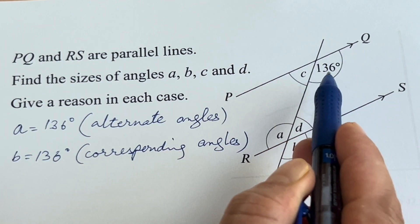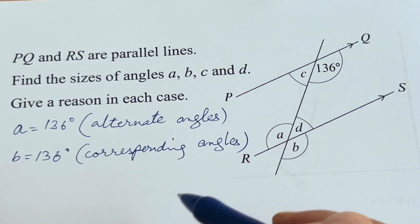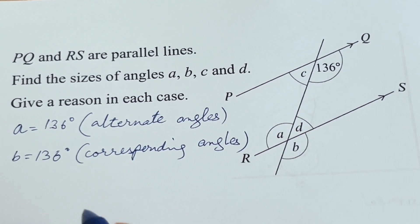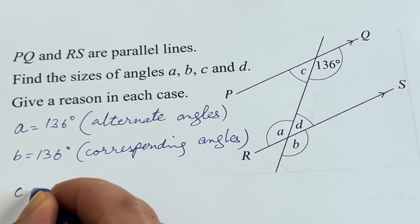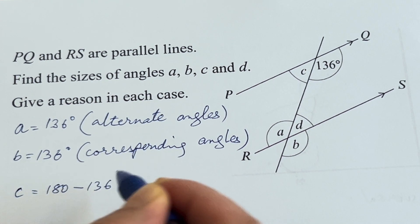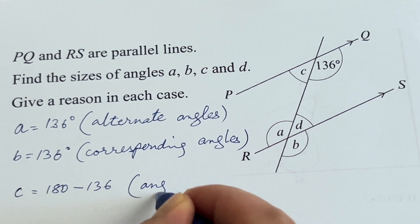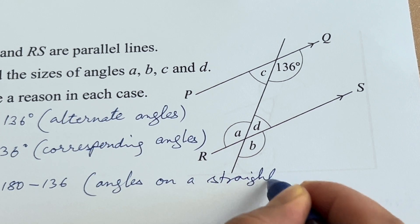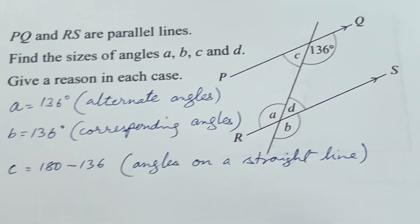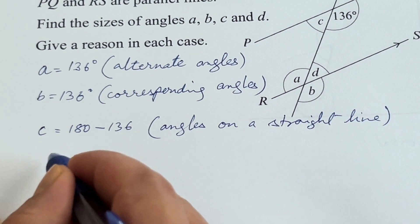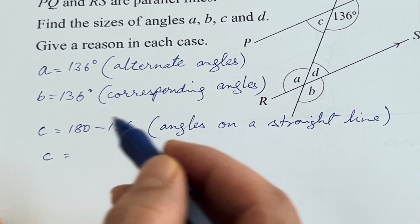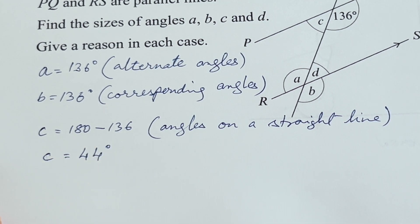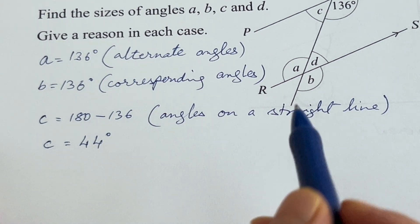For angle C, we use angles on a straight line. C equals 180 minus 136. The reason is that angles on a straight line add up to 180 degrees. So C equals 44 degrees.